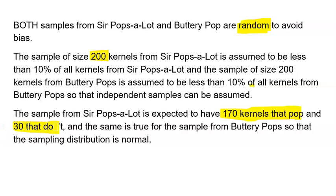And the third condition is that both samples are expected to have 170 popped kernels and 30 that don't. That was 85% of 200 and 15% of 200. But again, a lot of you guys are just writing, there's going to be 170 successes, 30 failures. That's no context there. 170 successes are kernels that pop, 30 failures are 30 that do not pop. That's what I want you to write. And the same is true for Buttery Pops because each sample was 200 and both samples are expected to have 85%. So again, you have to write this into nice full sentences if you want anything close to full credit in the future.